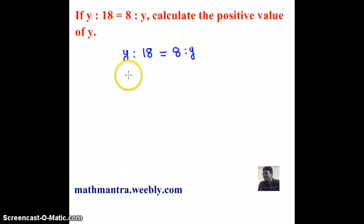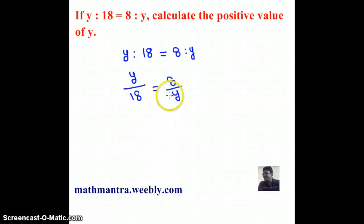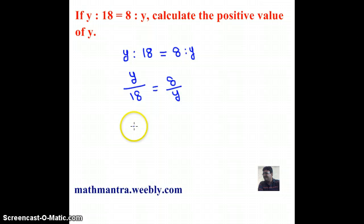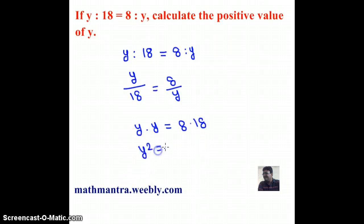Let's rewrite this so y over 18 equals 8 over y. This can be written as y times y equals 8 times 18, which is y squared equals 144. Now in order to get the value of y, y equals square root of 144.